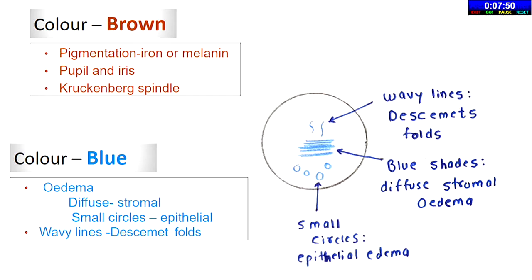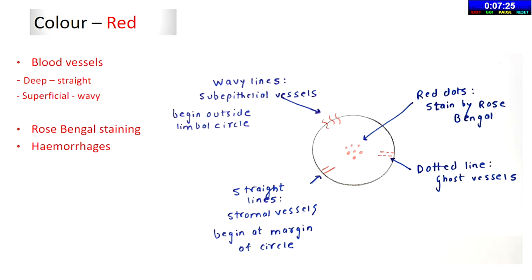Brown is for pigmentation — Krukenberg spindle on the pupil, iris, and endo-pigmentation — draw it on the back of the cornea. Blue is for edema: diffuse for stromal edema, small circles for epithelial edema, and baby lines for Descemet's folds. One diagram is worth a thousand words — the examiner will know you understand. Red is for blood vessels: wavy lines mean superficial, straight lines mean deep blood vessels. Rose staining is also in red.